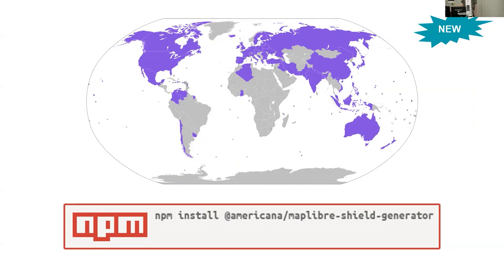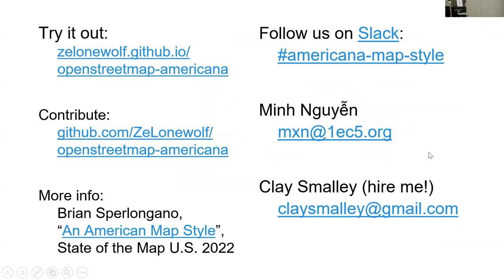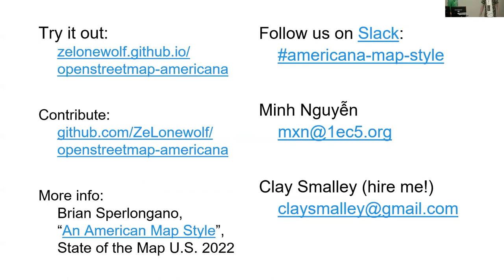We've finally packaged it as a library so you can use it yourself if you know how to work with MapLibre. Try out Americana for yourself at this first link — we update it with the latest OSM data regularly. Please send feedback our way through the GitHub repository, that's the second link. And if you're a designer or coder, please talk to us. We'll be around the conference with some examples of paper maps that inspired us. Also hiring — I'm looking for jobs. Any questions?